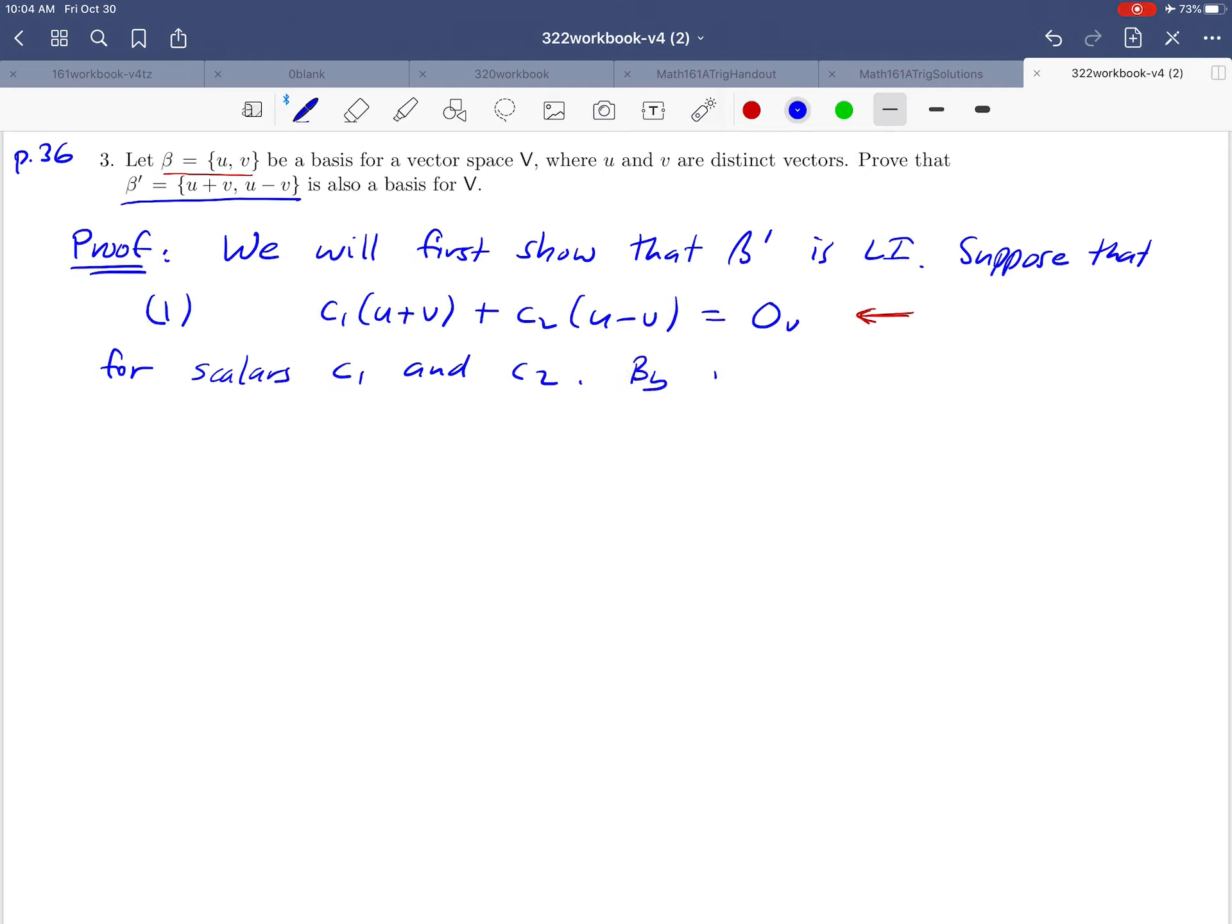By rearranging equation (1), we first distribute those scalars through. So c₁u + c₁v + c₂u - c₂v = 0, and then just do some grouping. We've got a couple of terms that involve u—let's put those together.